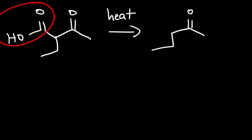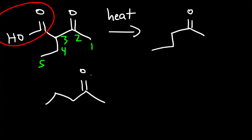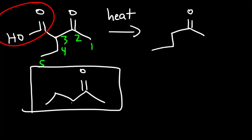So this is a 5-carbon ketone, which we can write like this. We have 2-pentanone as our product. Now let's work on another example.